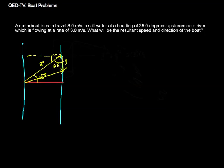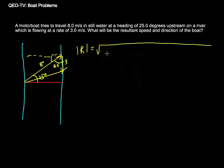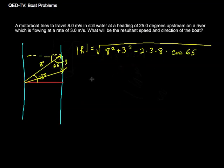I need to figure out what this resultant magnitude is. I have side-angle-side, so I can use the law of cosines. The resultant vector equals the square root of 8 squared plus 3 squared minus 2 times 3 times 8 times the cosine of 65 degrees. So I can figure out the resultant using the law of cosines, and that gives us 7.3 meters per second.